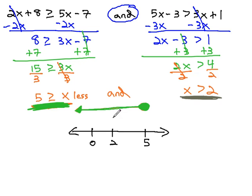The second inequality starts at 2 with an open circle, and because it's greater, greater than the number, we go off to the right.